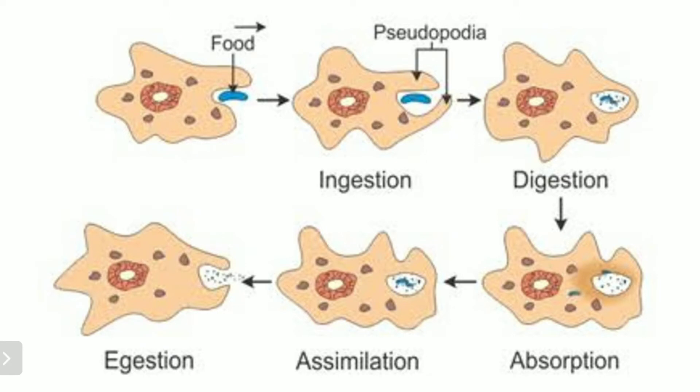Amoeba's nutrition — you can see it on the screen. First of all, we need to know that amoeba's body is asymmetric, which means it is not in symmetry. It does not have a fixed shape; every time it changes its shape. You can see that amoeba is in a zigzag shape.